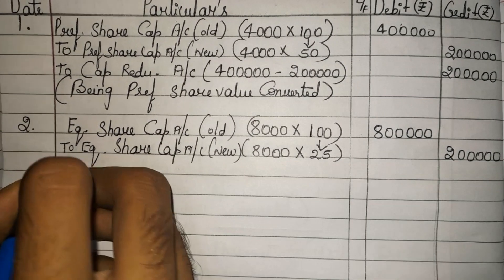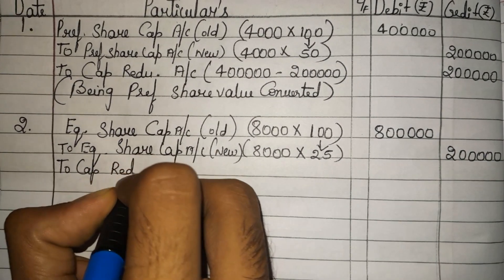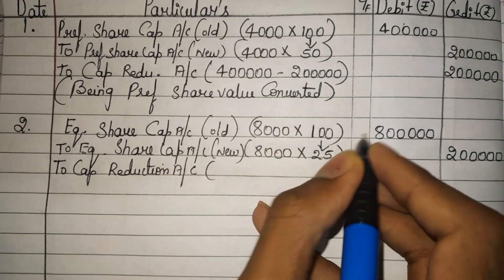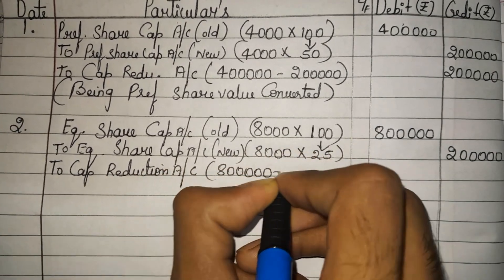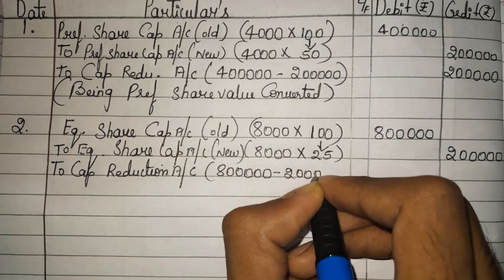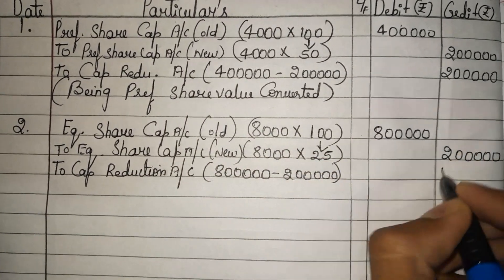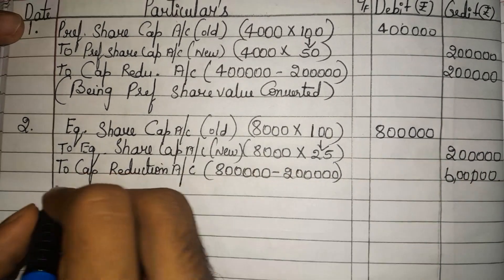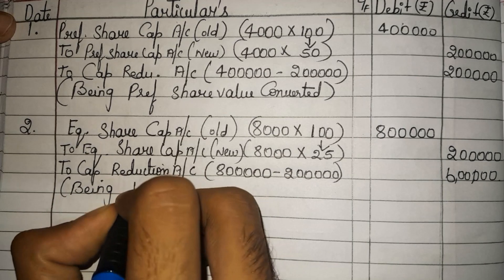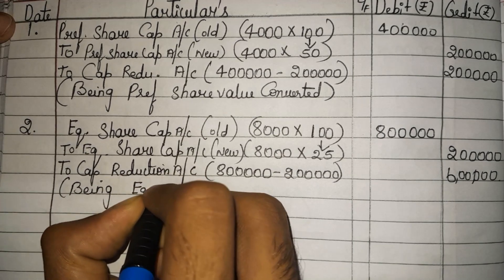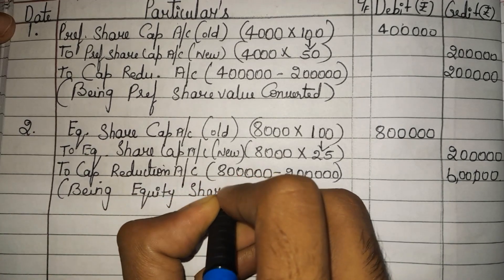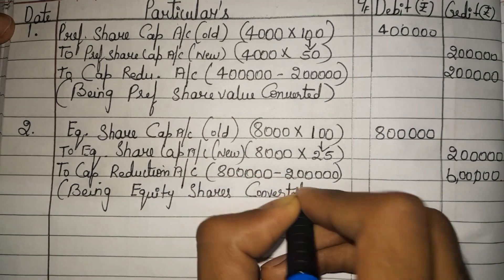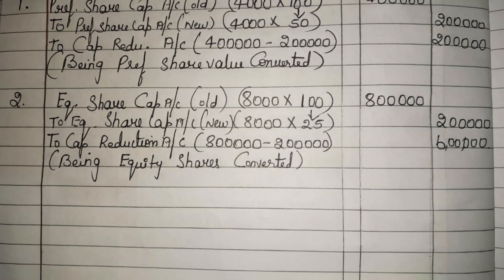The remaining balance should be transferred to capital reduction account. So capital reduction account receives 8 lakh minus 2 lakh, which equals 6 lakh. The narration will be: being equity shares converted. This completes the journal entry for equity shares.